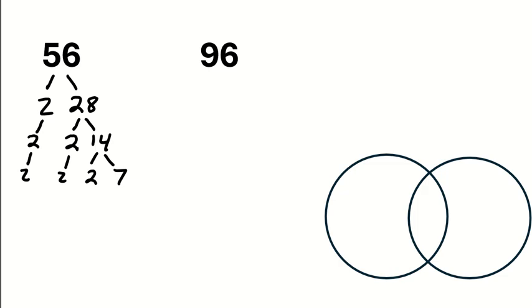But now we got to do the same thing for 96. Well, 96 is even, so we can always do 96 divided by 2, and that's 48, which means that 2 times 48 is 96. Let's bring down that 2 because it's prime. Break up that 48 because it's composite. 2 times 24 is 48.